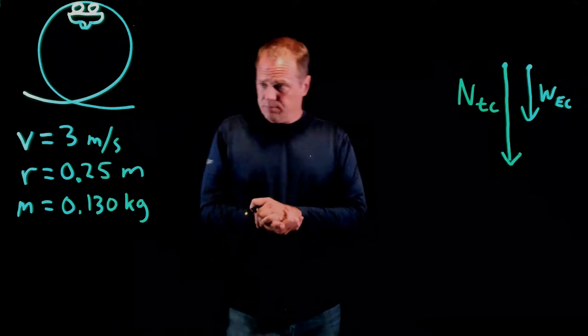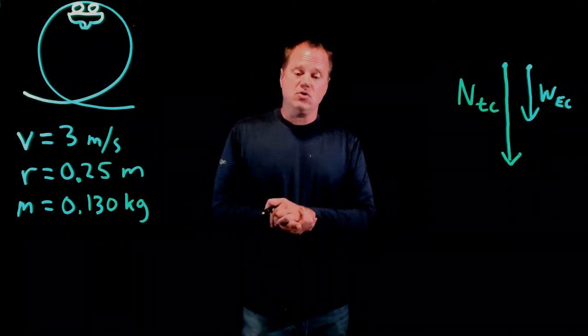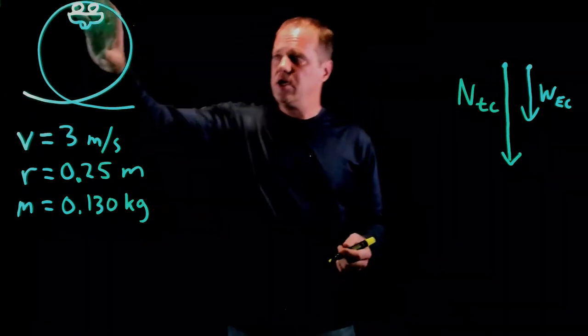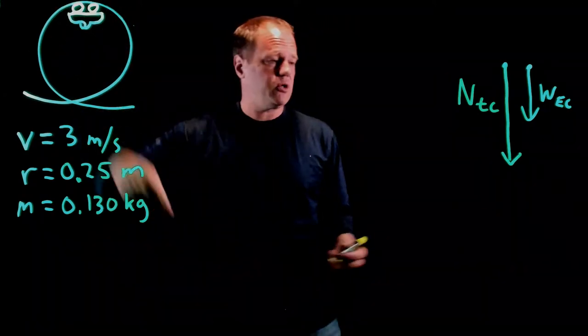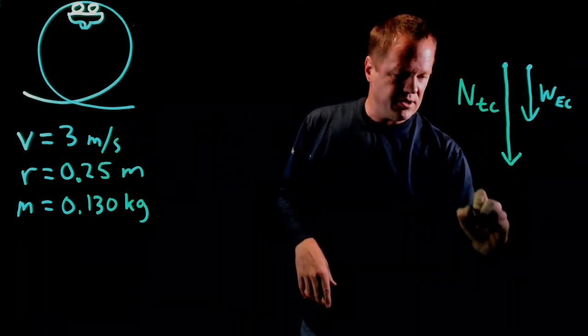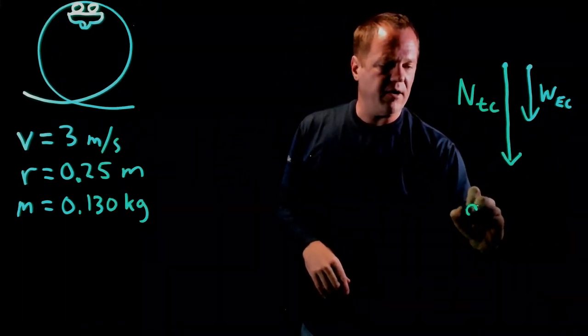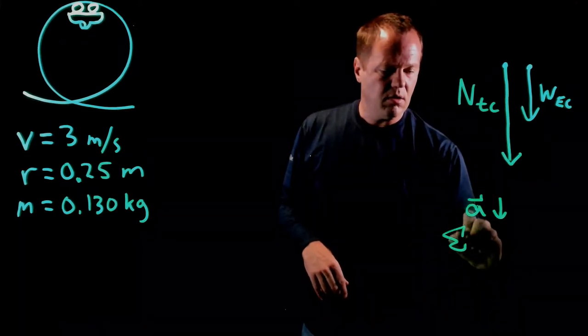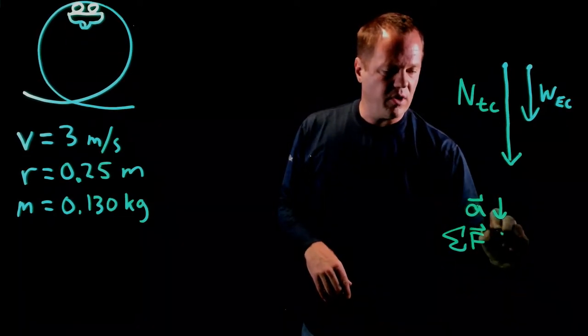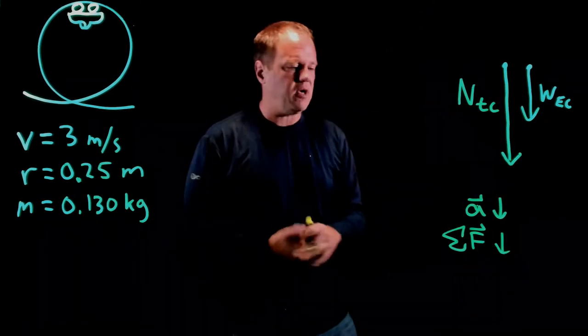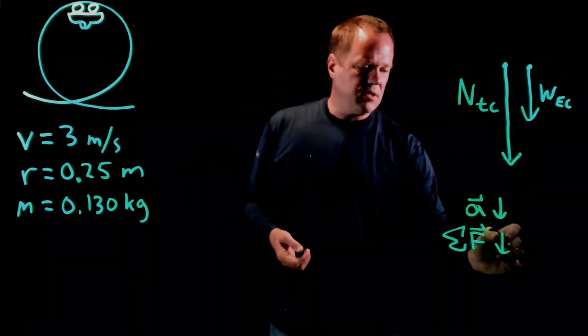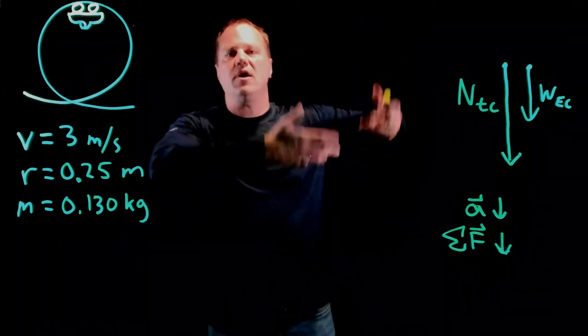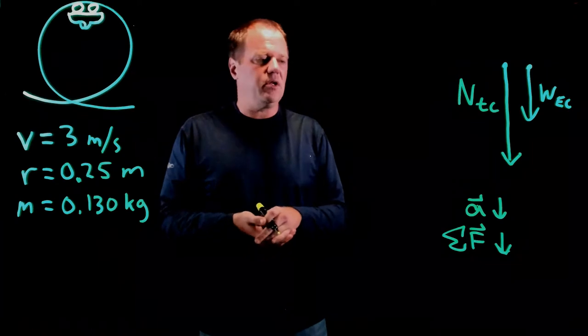So next thing I want to think about is the direction of the acceleration and the net force. Well, the acceleration is towards the center of that circle. It's moving in a circle. The acceleration is, and this isn't part of the free-body diagram, but the acceleration is down, and therefore the vector sum of the forces has to be down. That should be pretty obvious with the free-body diagram. This is a little bit counter to our physical intuition, which suggests that there has to be something holding it up, but there really isn't.